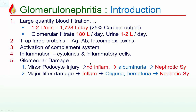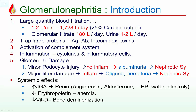Clinically, to understand the two major types of glomerular damage: minor damage to the podocytes only, without inflammation, leads to pure albuminuria, selective proteinuria, and nephrotic syndrome. Major filter damage leads to inflammation, leakage of whole blood, hematuria, and oliguria because inflammation compresses the capillaries and blood flow is decreased — that gives nephritic syndrome.